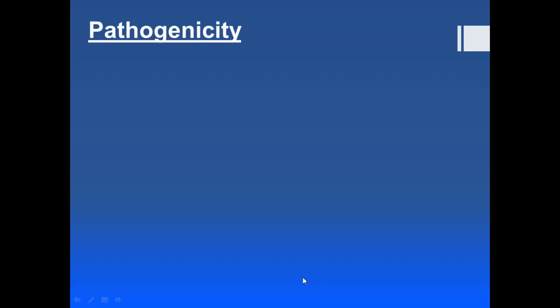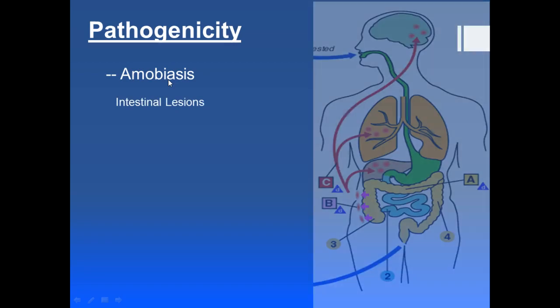Now let's move to pathogenicity — what are the various complications caused by Entamoeba histolytica. First is amoebiasis. Amoebiasis includes all the clinical conditions that are produced in the human host by infection with Entamoeba histolytica.